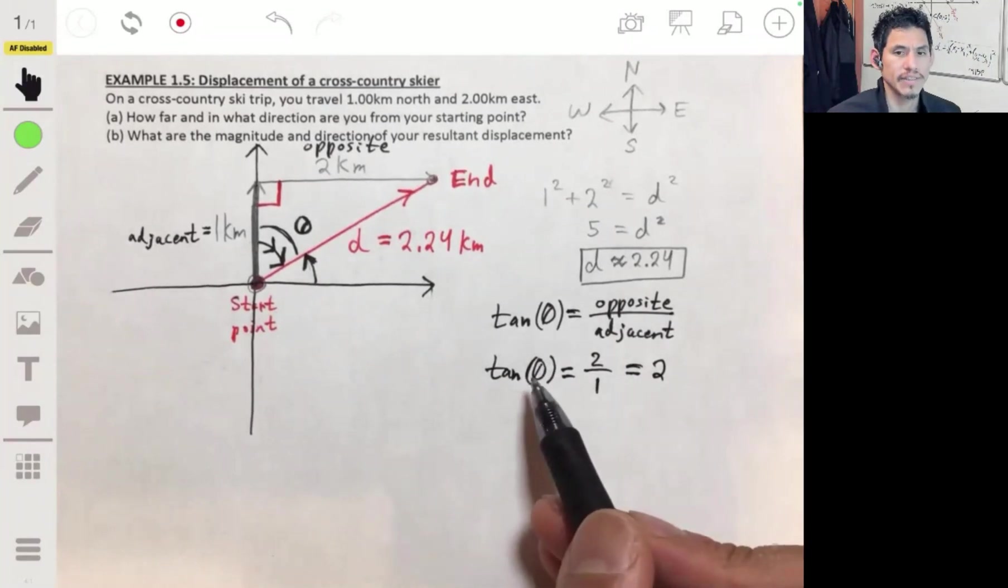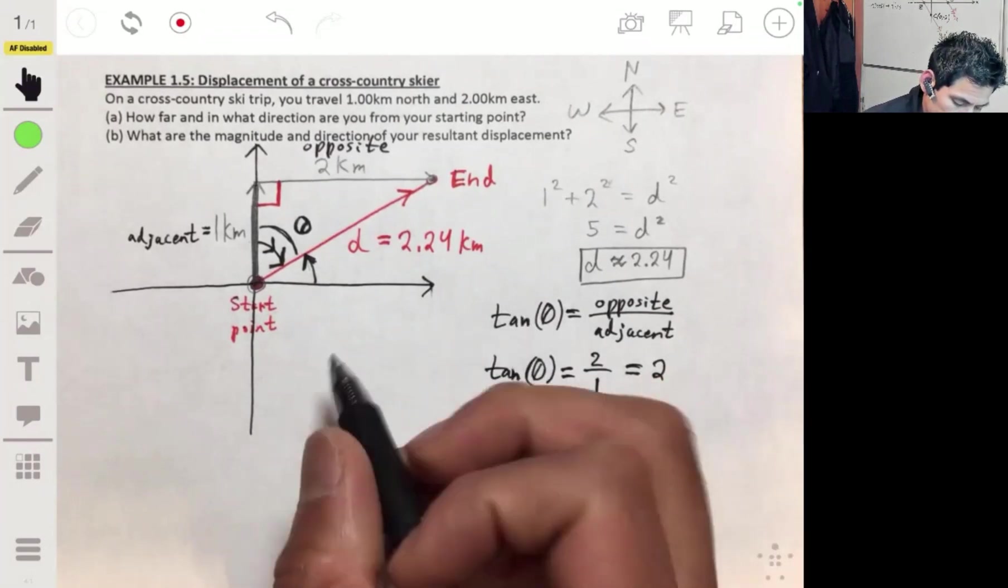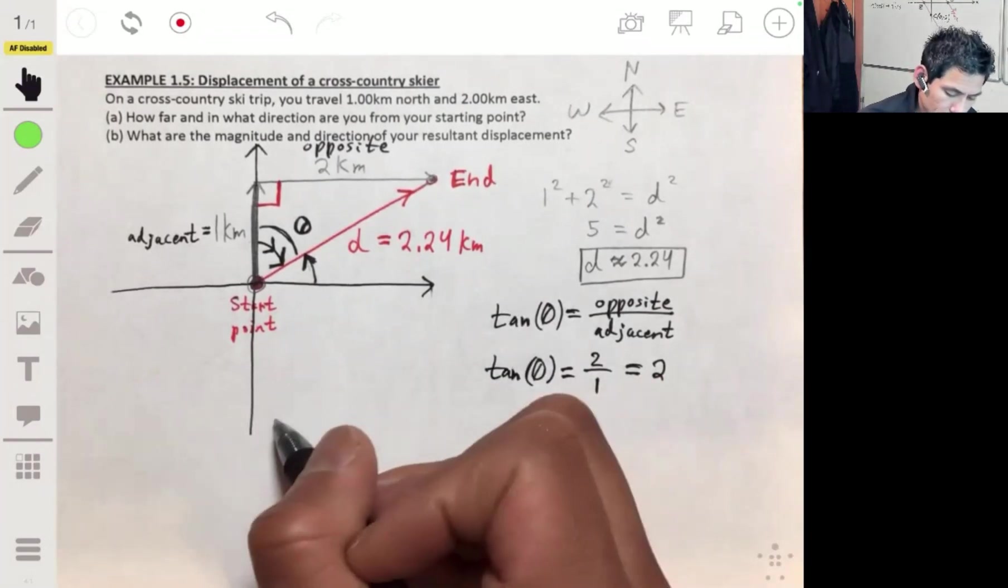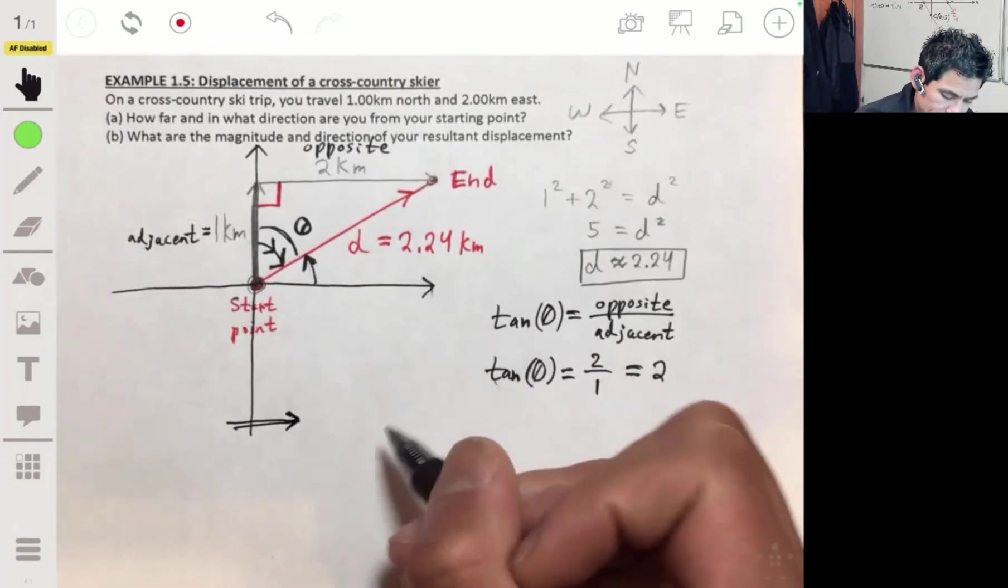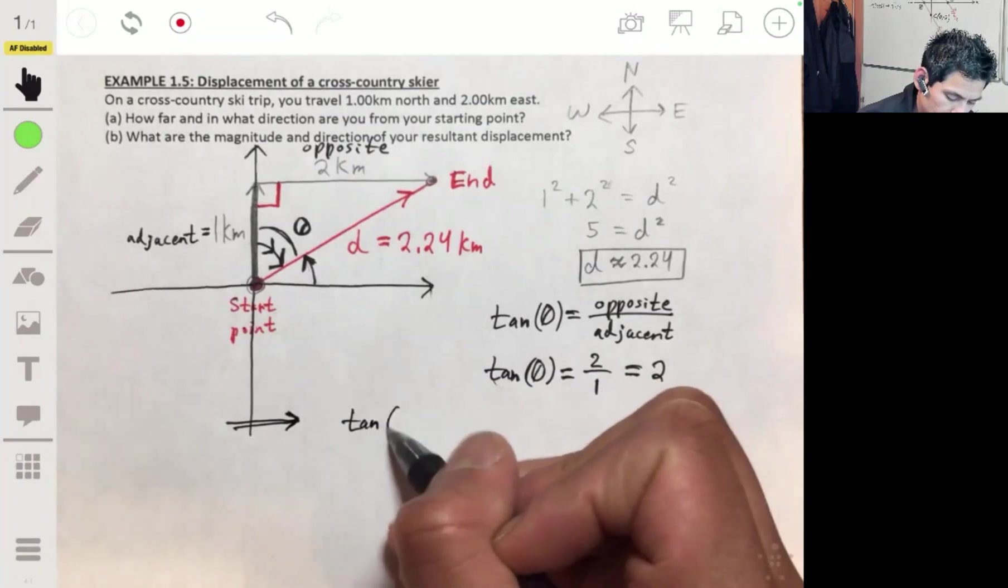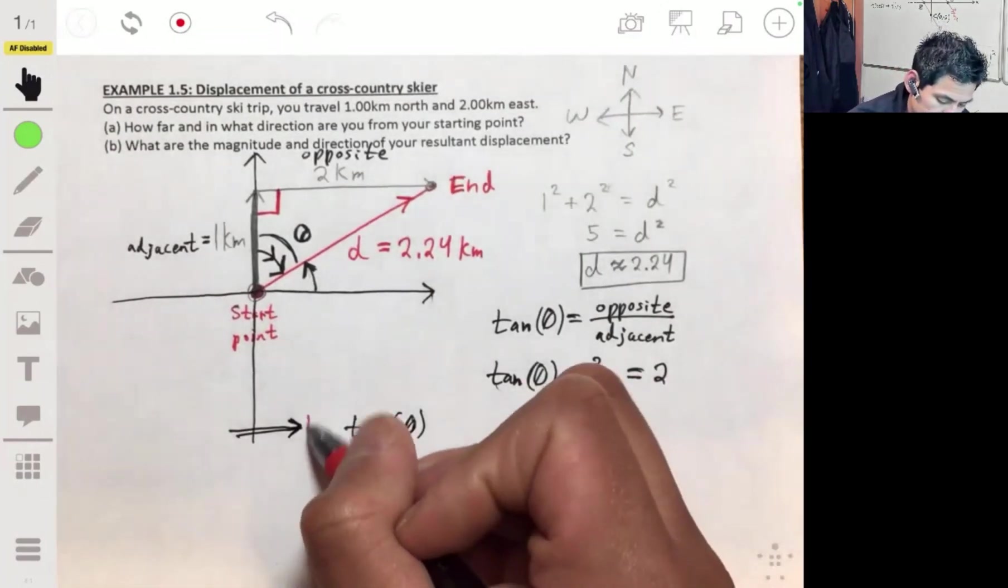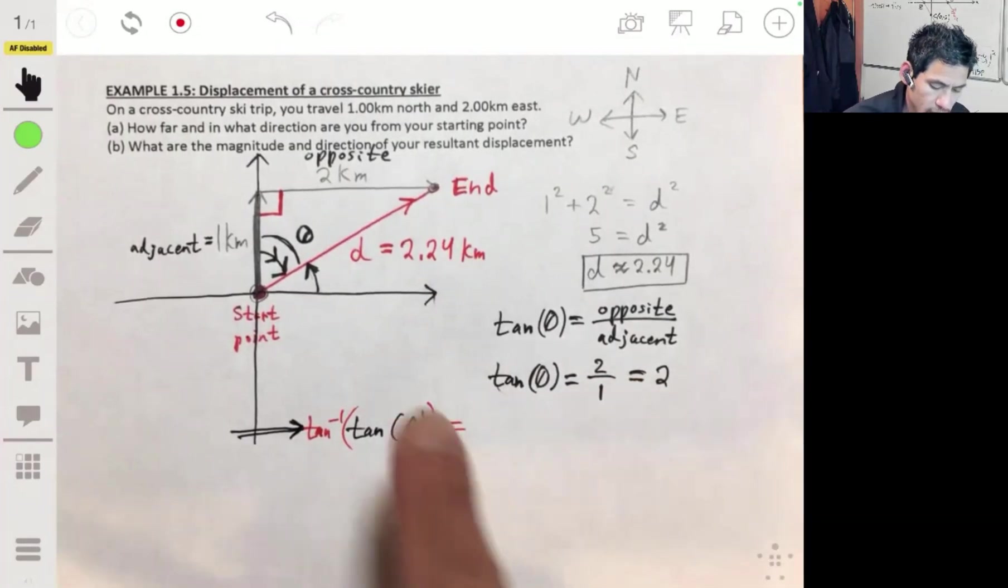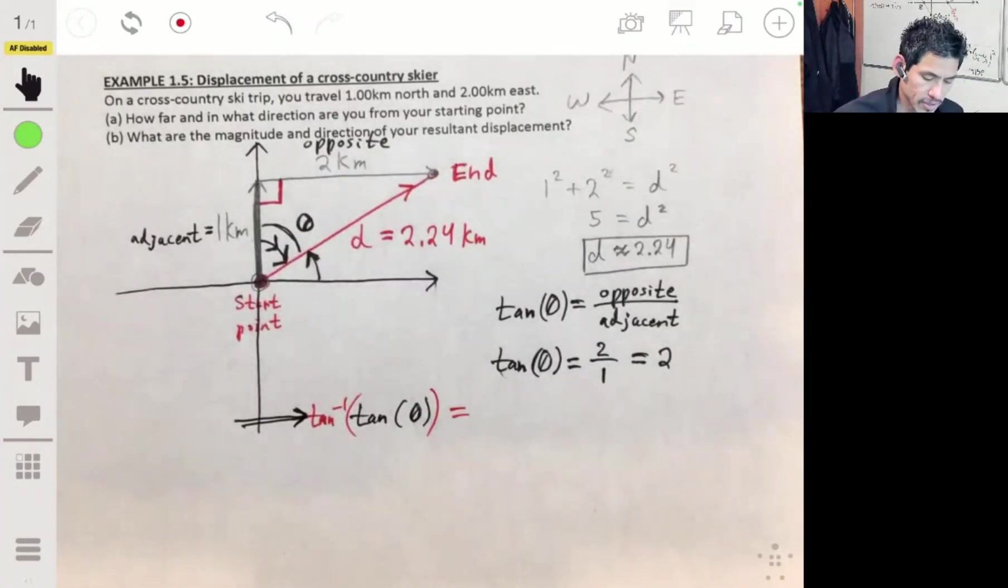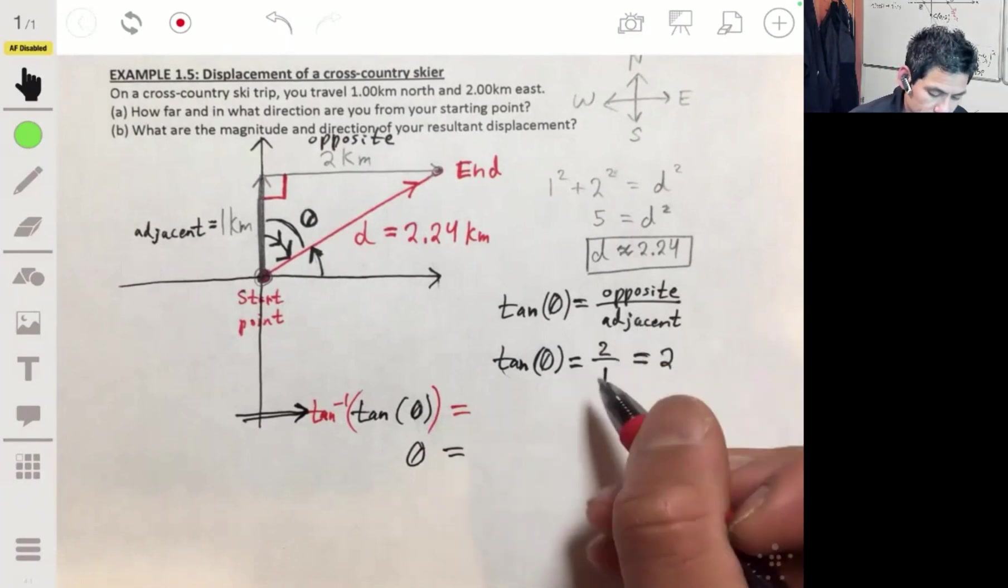But the thing is, we need to find theta. We need to find the angle. So to find the angle, we want to take the inverse tangent of that. Because when you take the inverse tangent function, you're going to be left with the angle. And that means you're going to take the inverse tangent of two.